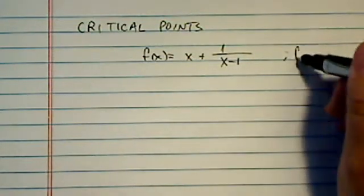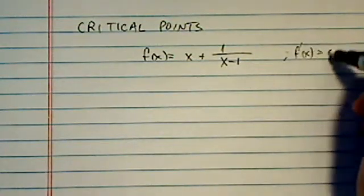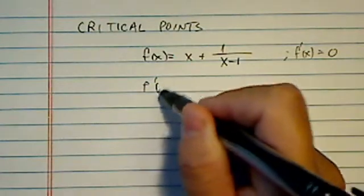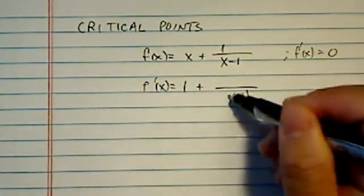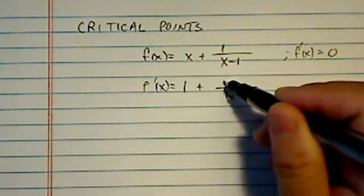Thank you for watching this clip on finding critical points. Critical points are defined as when the derivative equals 0, so of course we'll have to find the derivative first. 1 plus, this is relatively easy to find, so derivative at the top is 0.